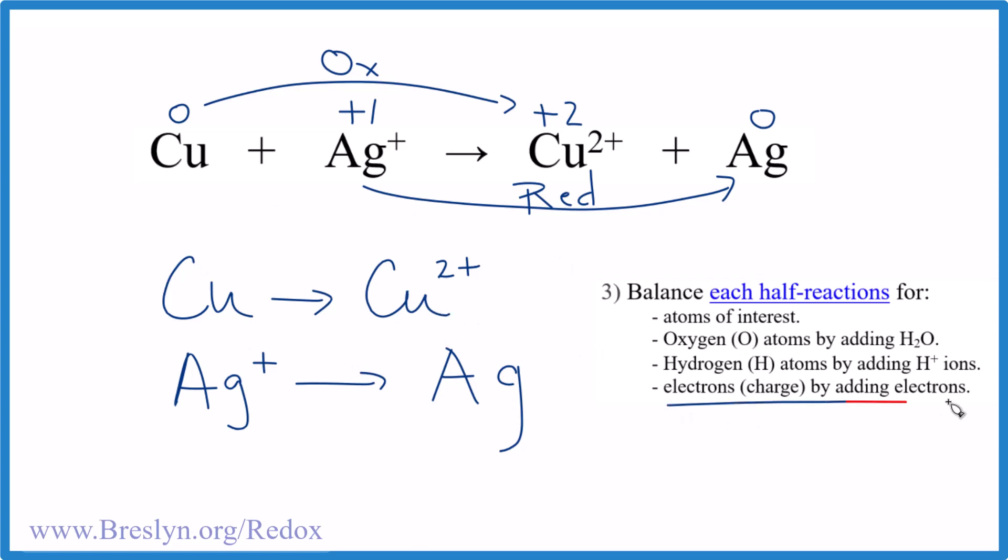The last bit is to balance the charge by adding electrons. So here we have two plus. This is neutral. So let's add two negative charges, two electrons. Now this side is zero and this side is zero. This half reaction is balanced. Over here we have a plus, so let's add a negative charge. Just one electron here. This is zero. That's zero. We're done. We've balanced the half reactions.